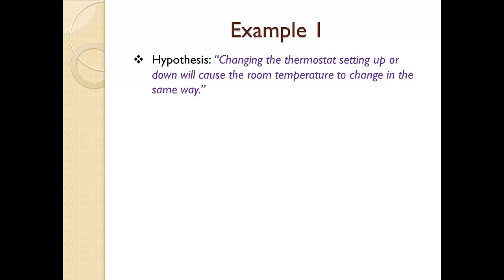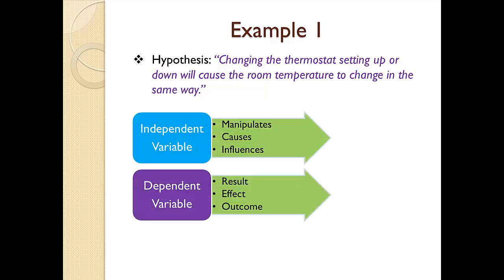Let's begin with a really simple one. Our hypothesis for this example will be that changing the thermostat setting up or down will cause the room temperature to change in the same way. Let's figure out what our dependent and independent variables are in this hypothesis. The easiest way to do this is to go back to our definitions. We are looking for the item in our hypothesis that manipulates, causes, or influences something to be our independent variable. When I look at the hypothesis, I see that the thermostat setting is the thing I am talking about altering. Therefore, it is my independent variable.